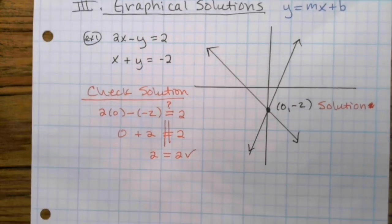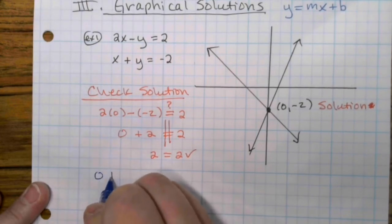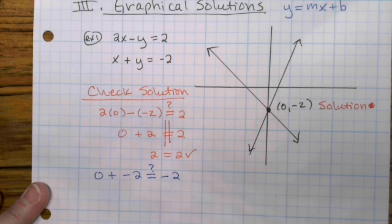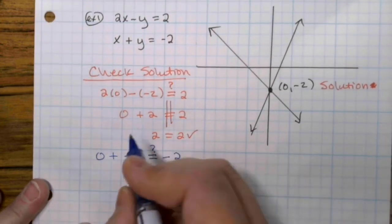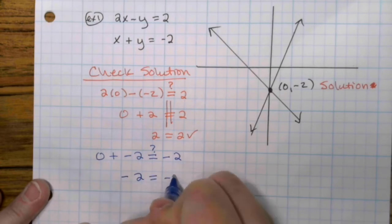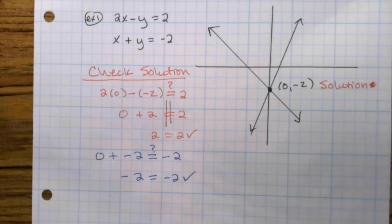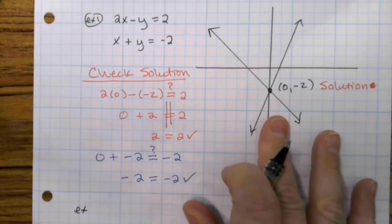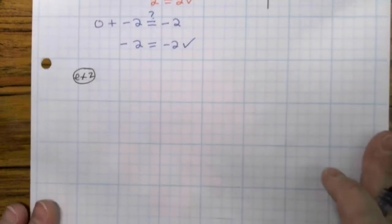Now we're going to check it in the second equation, this one. So 0 plus a negative 2. Is that equal to negative 2? Negative times a positive is a negative. So yes, it works in that equation as well. This is why this point is the solution. That's what you're going to get most of the time. Vast majority of the time, you will get an answer for two lines.